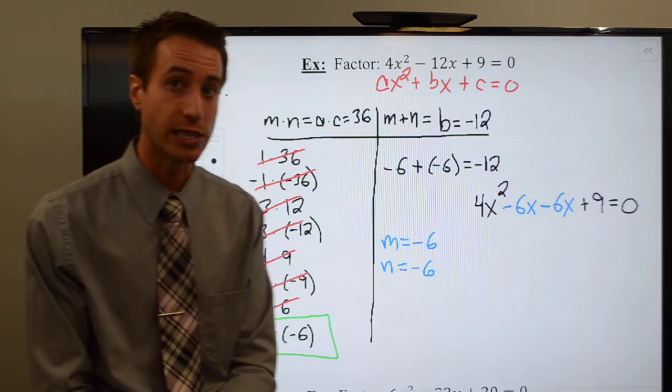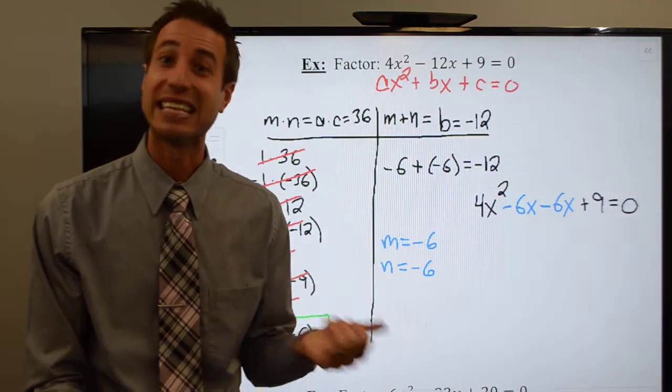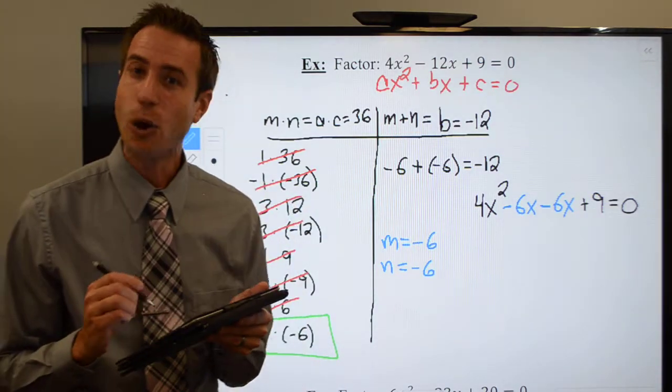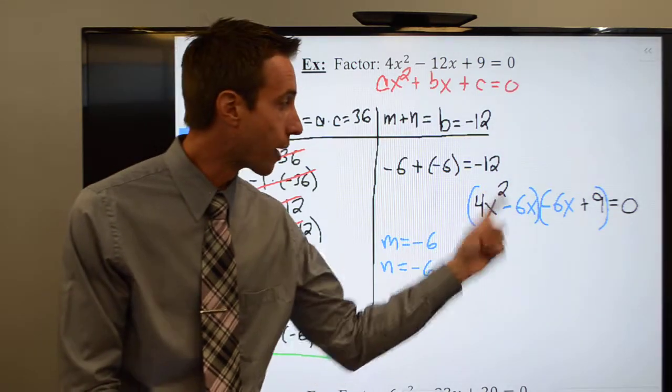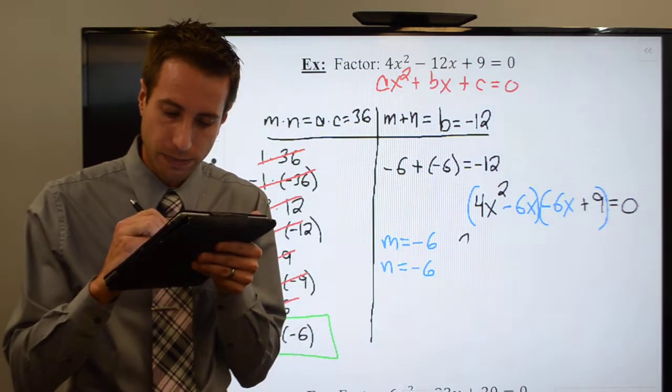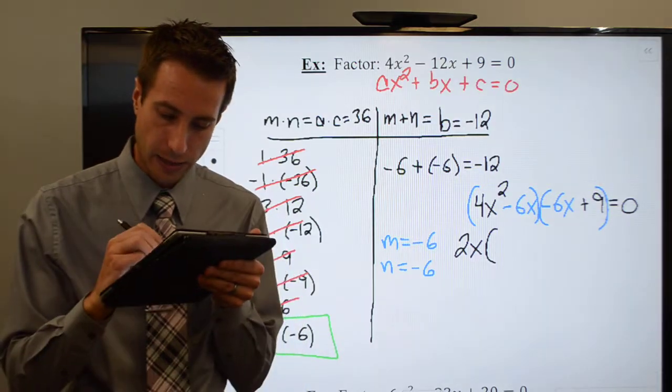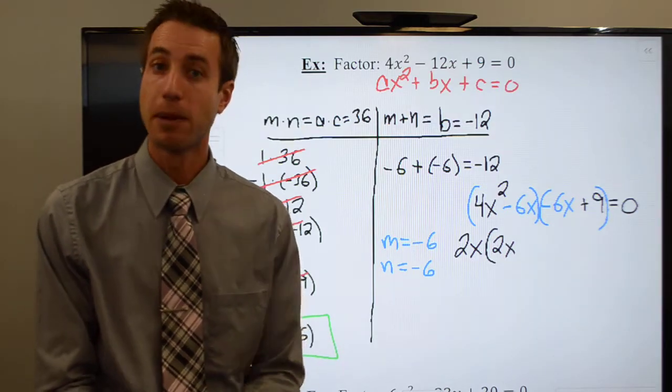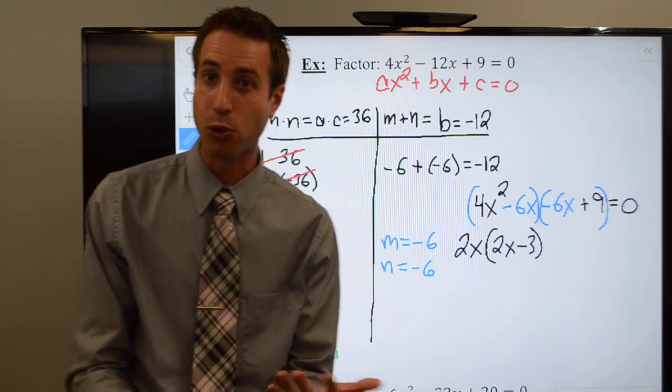Now we do. Check this out. If I go ahead and group the first terms together and the last terms together, 4x squared minus 6x. Yeah. Those guys have a GCF. 2x. So, pull it out. Now, if I pull a 2x out of 4x squared, I would be left with a 2x. If I pull a 2x out of a negative 6x, I'd be left with minus 3.